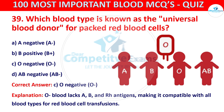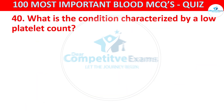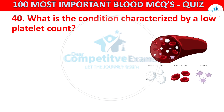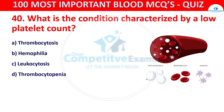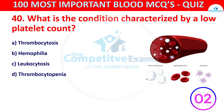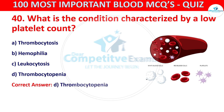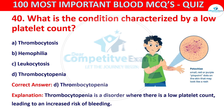Question number 40. What is the condition characterized by a low platelet count? Your options are thrombocytosis, hemophilia, leukocytosis, or thrombocytopenia. The correct answer is D, that is thrombocytopenia. Thrombocytopenia is a disorder where there is a low platelet count, leading to an increased risk of bleeding.